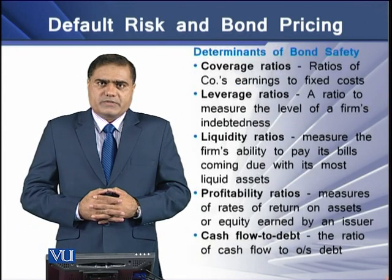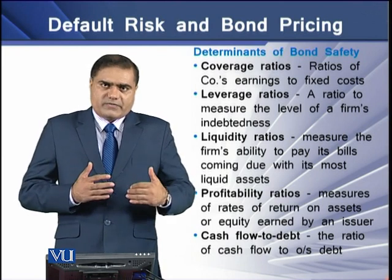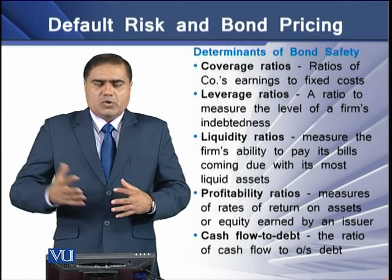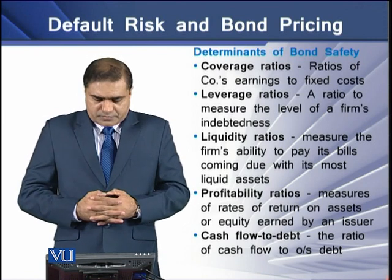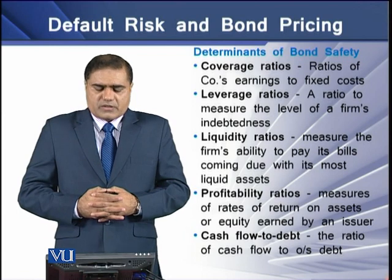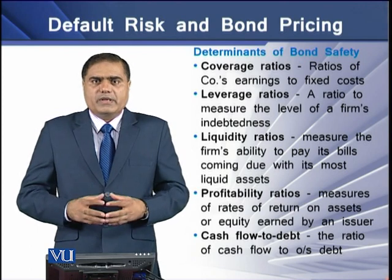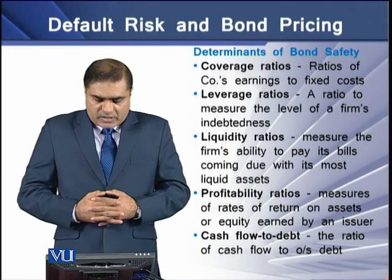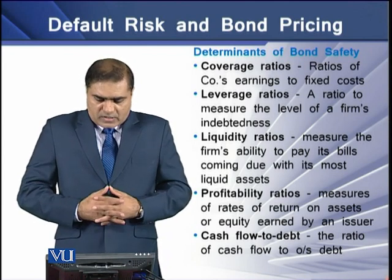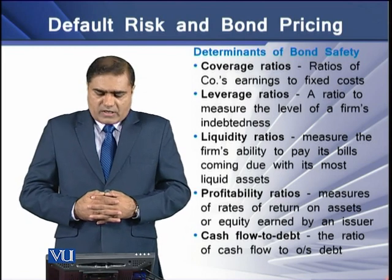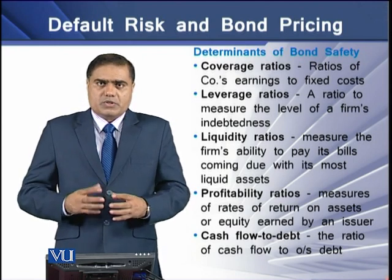Determinants of bond safety concern how the amount collected through a bond can be safely repaid to the bondholders. Certain parameters are considered. First is the coverage ratios — these are the ratios of a company's earnings to the fixed costs borne by the company in the form of interest payments. Leverage ratios measure the level of a firm's indebtedness. Liquidity ratios measure the firm's ability to pay its bills coming due with its most liquid assets.